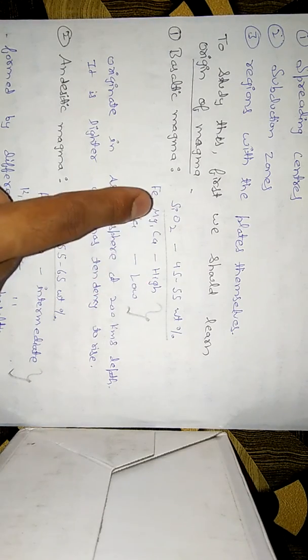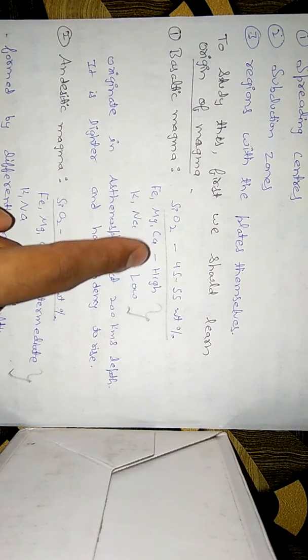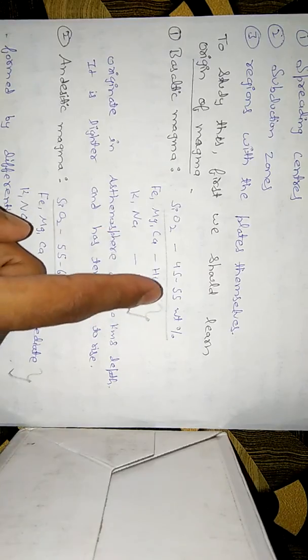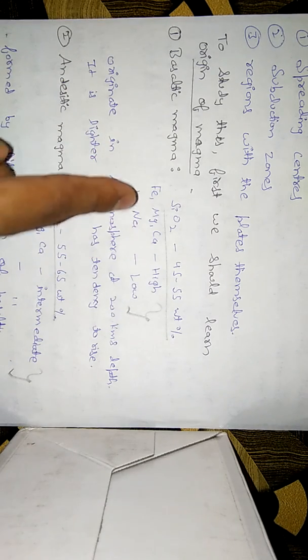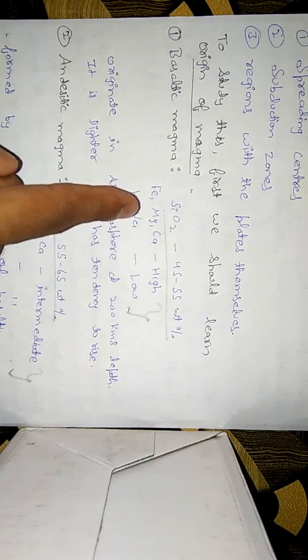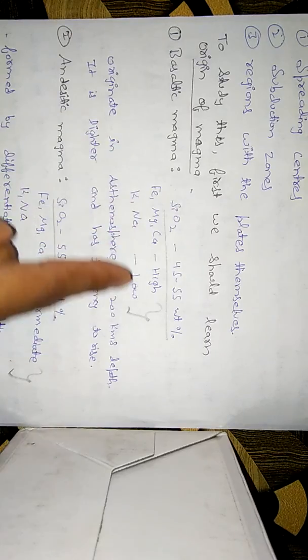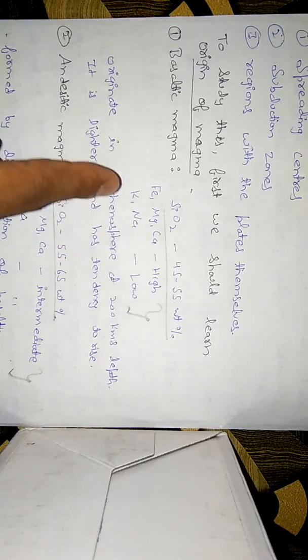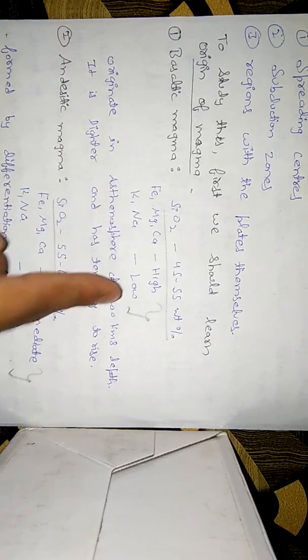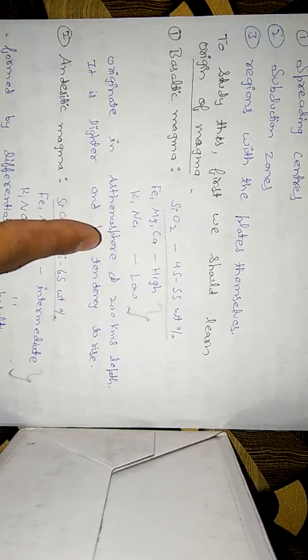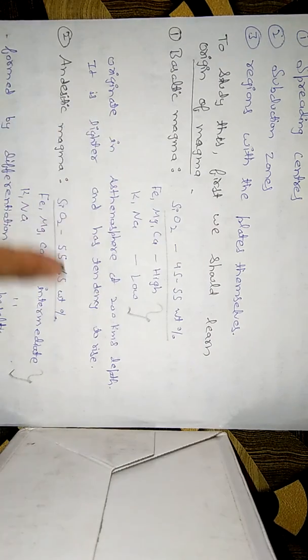In basaltic magma, SiO2 (silicon dioxide) is from 45 to 55 weight percent. Fe, Mg, and Ca — that is ferric, magnesium, and calcium — are high, while K (potassium) and Na (sodium) are low. Basaltic magma originates in the asthenosphere at around 200 kilometers depth. It is lighter and has a tendency to rise.